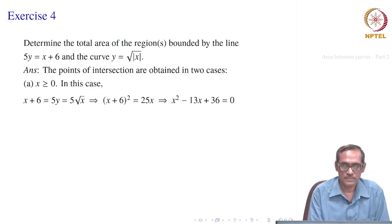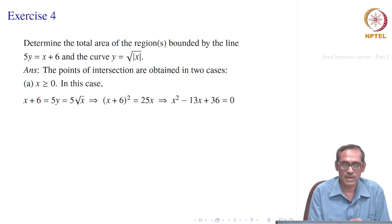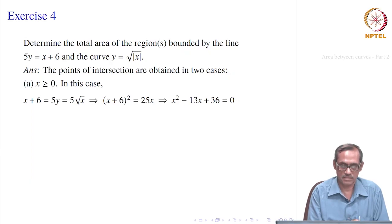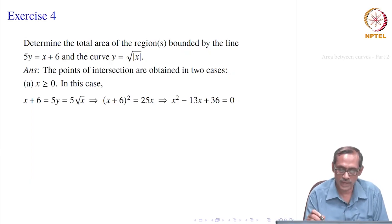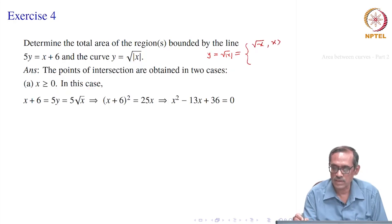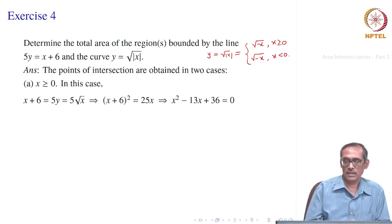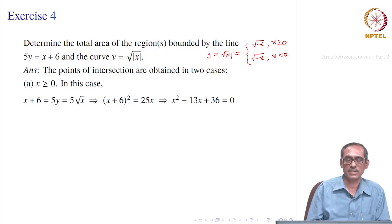Let us go to exercise 4. We want to determine the total area of the regions bounded by the line 5y = x + 6 and the curve y = √|x|. Using the definition of |x|: y = √x for x ≥ 0, and y = √(-x) for x < 0. So we have to consider two cases — when x is positive and when x is negative — then find the corresponding regions and add them up.